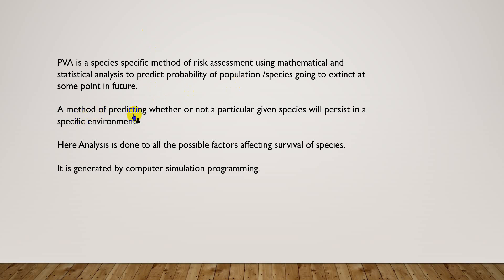PVA is a method of predicting whether or not a particular given species will persist in a specific environment. By this method we can predict whether or not a species will survive in a certain environment, and whether or not it can adapt to the changing environment. Analysis is also done on all the possible factors affecting the survival of species.